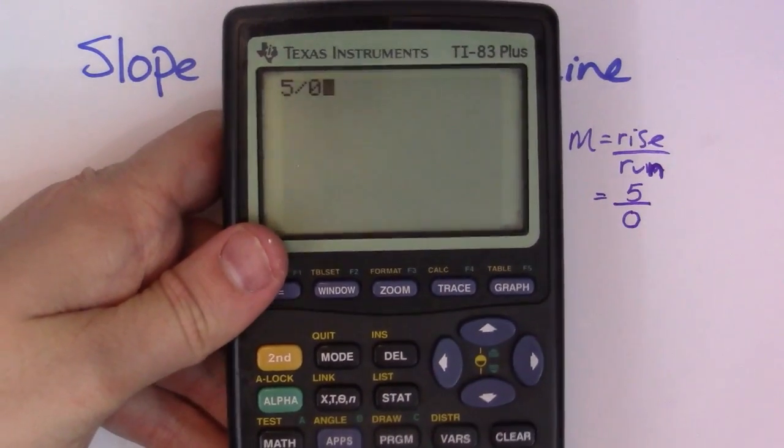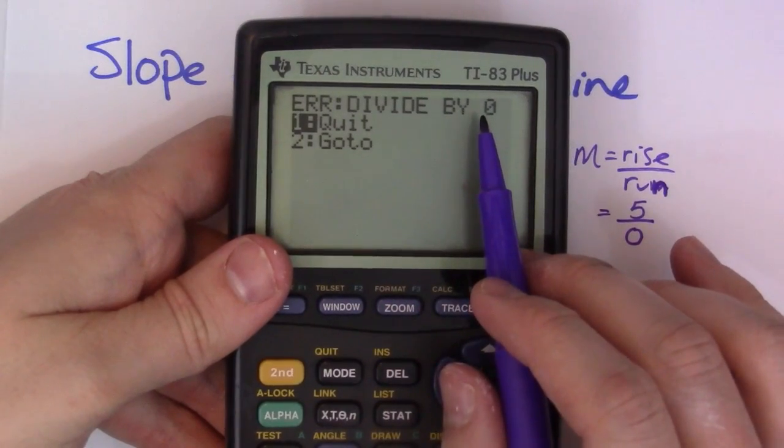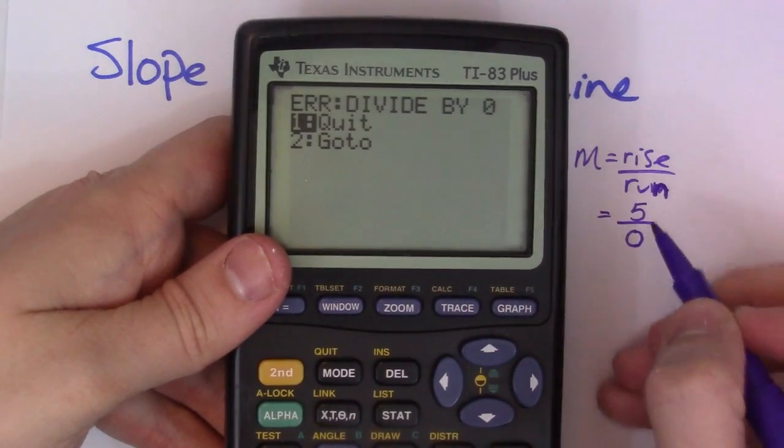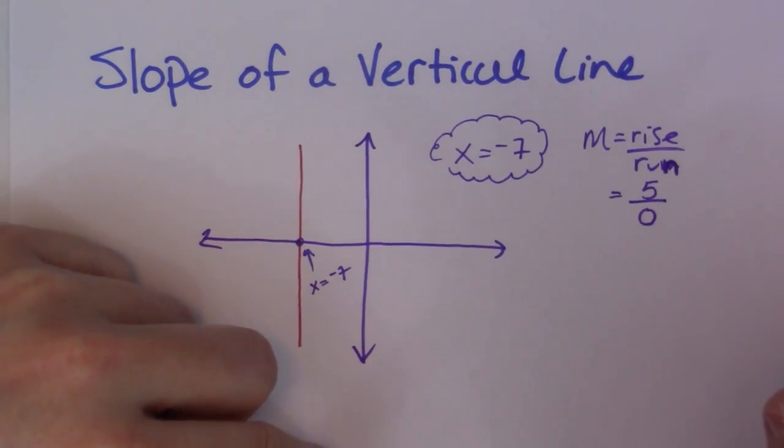5 over 0, bam, I get an error. Divide by 0. So what that means is we can't divide by 0. It's mathematically impossible. You can't break something into 0 parts.